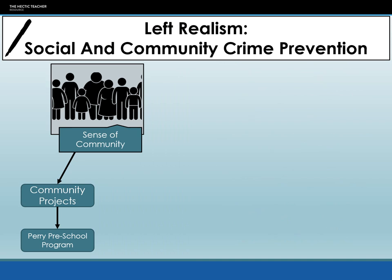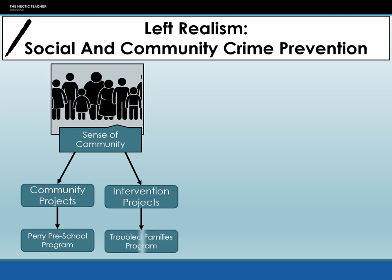The second part of creating a sense of community involves intervention projects. Community projects are pre-emptive, trying to prevent criminal behaviour before it starts. Intervention projects work with families and people who have already encountered problems. An example is the Troubled Families Programme run here in the UK.